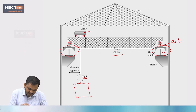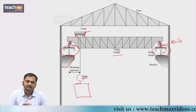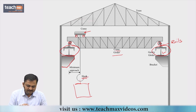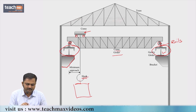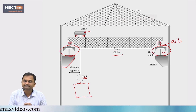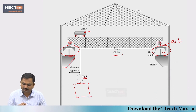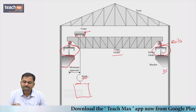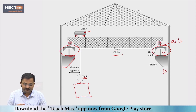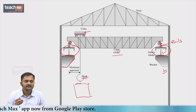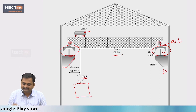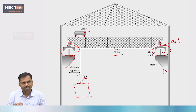The gantry girder rests on brackets provided on the column for smaller cranes where the load is not very large. The load from the bracket transfers over the column. For heavy loaded crane girders, the entire gantry girder assembly is placed directly on the column without a bracket.